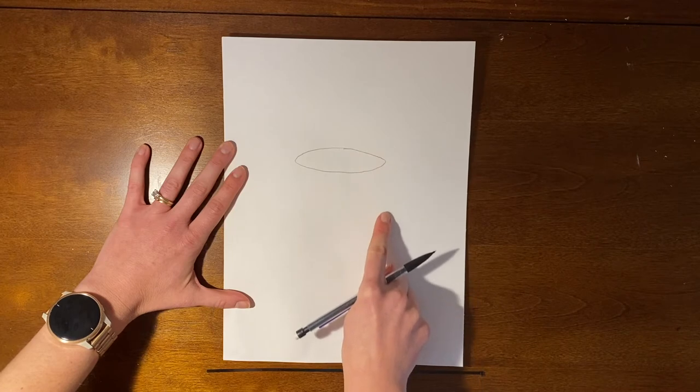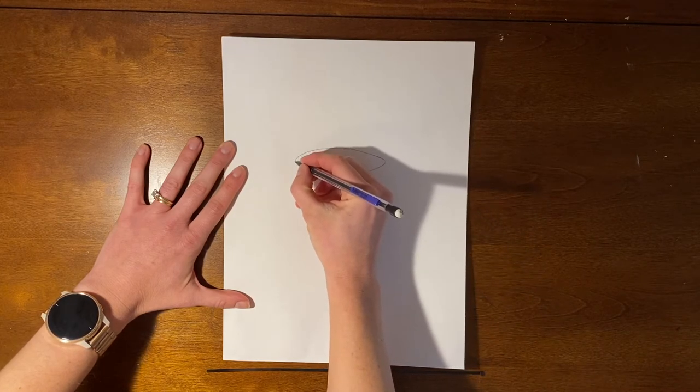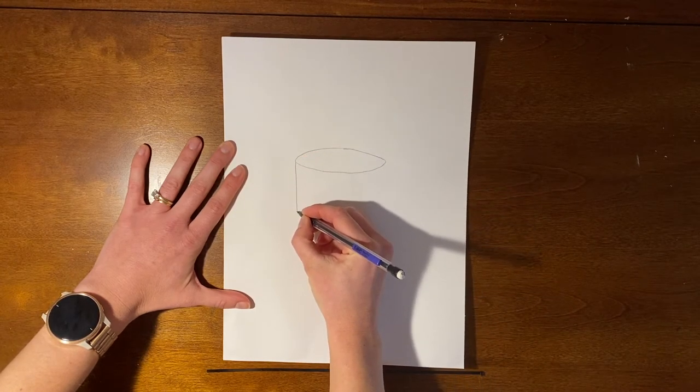Now on the ends of the oval, let's draw two vertical, that means up and down lines, the same length.